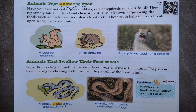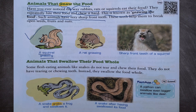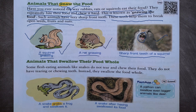Now let us see animals that gnaw their food. Have you ever noticed the way rabbits, rats or squirrels eat their food? They repeatedly bite their food and chew it hard — this is known as gnawing. Such animals have very sharp front teeth which help them to break open seeds, fruits and nuts. We can see a squirrel gnawing its food and a rat gnawing its food.